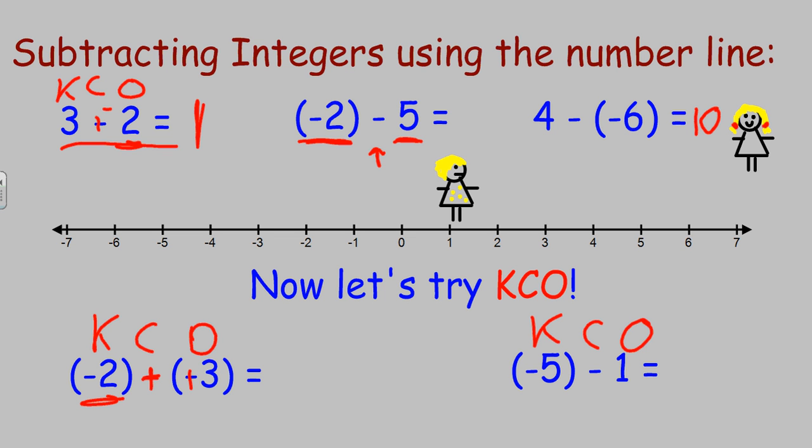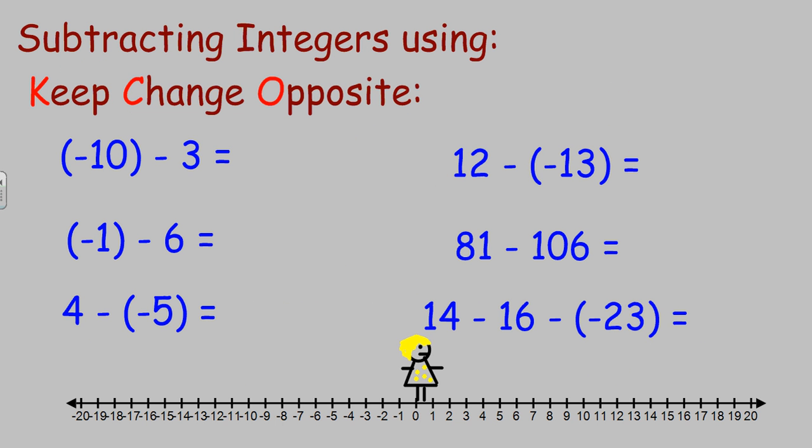You go ahead and try this one: negative 5 minus 1. Pause the screen and then push play when you're ready. All right, you should have gotten keep change opposite: negative 5 plus negative 1 is negative 6. Here's some more to practice with. Go ahead and practice using keep change opposite.